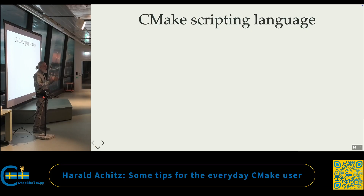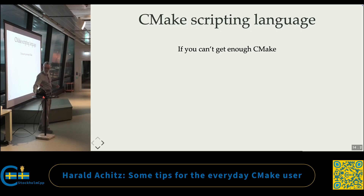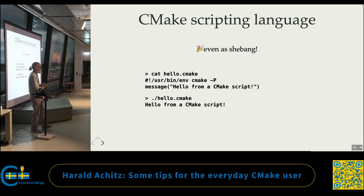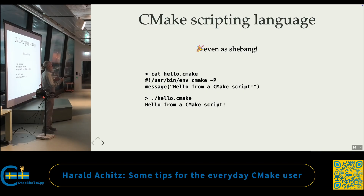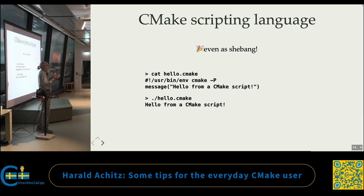CMake as a scripting language. If you can't get enough CMake, you use it as a scripting language — you call CMake with -P and give it the script. It works even as a shebang, which is nice. This is actually useful because if you do a library that people should use over the Internet, you don't know which Python version they have — or if they have Python at all. For usual build operations like moving files or reading something, CMake has a lot of things built in. So you can just call CMake for these tasks with no external dependencies. It makes sense, believe it or not, sometimes.